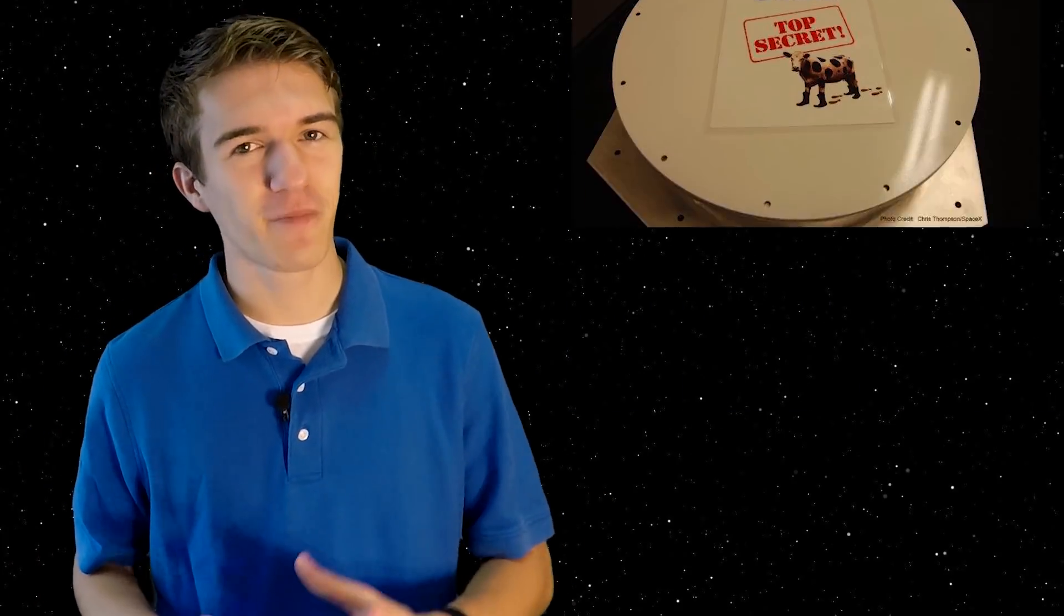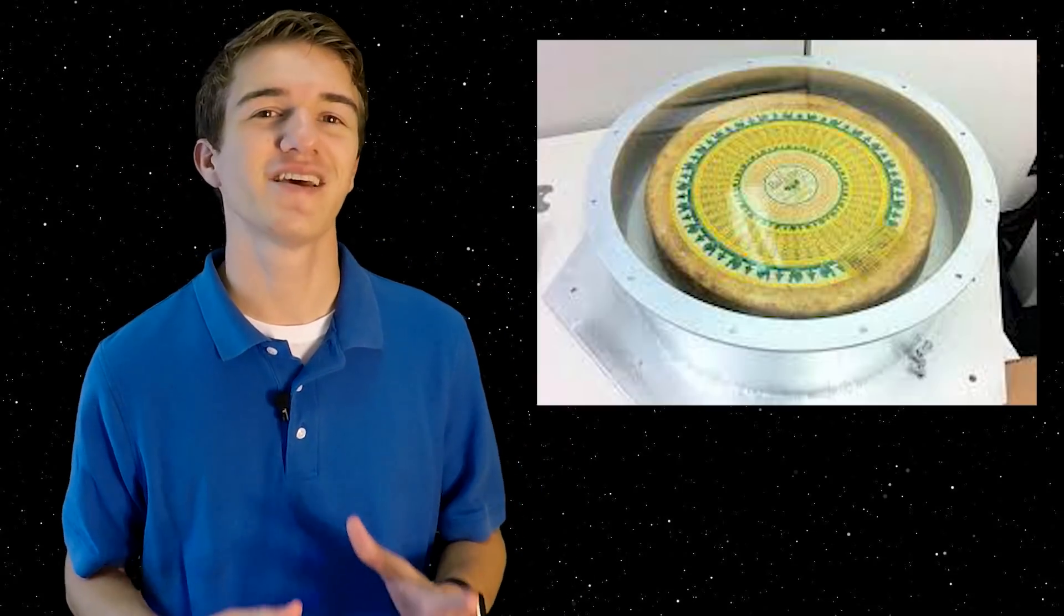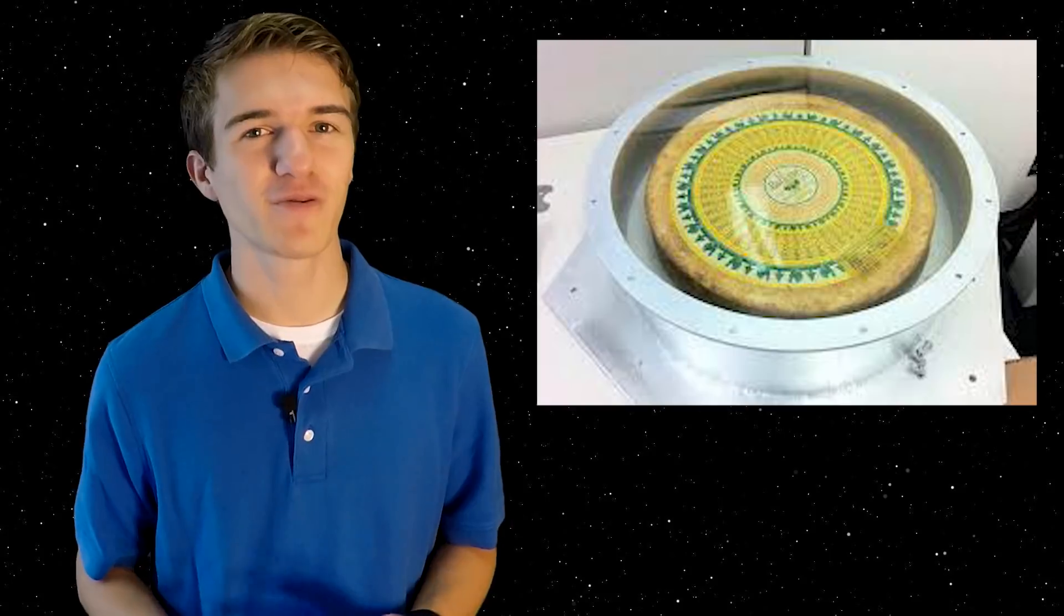Now, there was a secret payload that was put on board. Elon Musk had a wheel of cheese in the Dragon capsule to represent one of the Monty Python's flying circus skits.